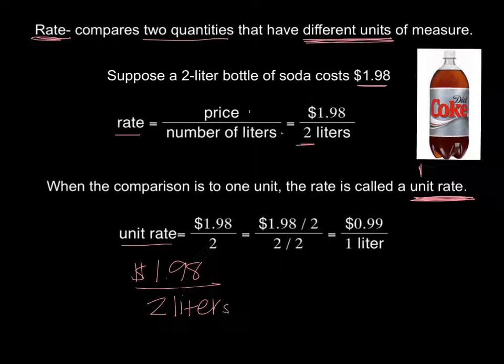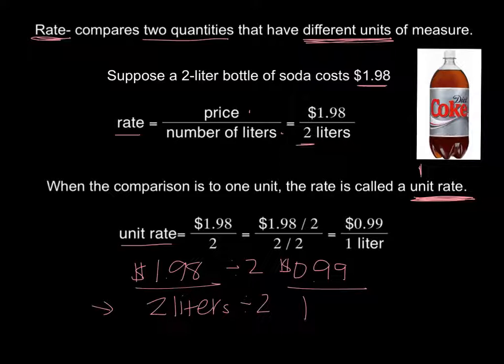So I would write that like $1.98 per 2 liters. Now to figure out, I want to make my denominator equal 1. Well if I have 2 there, that means I have to divide the numerator and denominator by 2. So if I divide $1.98 by 2, I would get $0.99 for 2 divided by 2 would be 1 liter. So to get the unit rate we just have to get our denominator to equal 1. Now let's practice that.